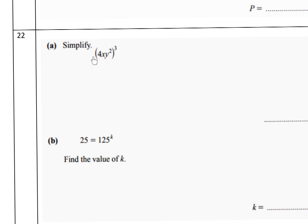Continuing problem 21: (4^3 · x^3 · y^2)^3. 4^3 is 64. x^3 to the power 3 gives x^9... wait, y^2 to the power 3 gives y^6. The answer is 64x^9y^6.